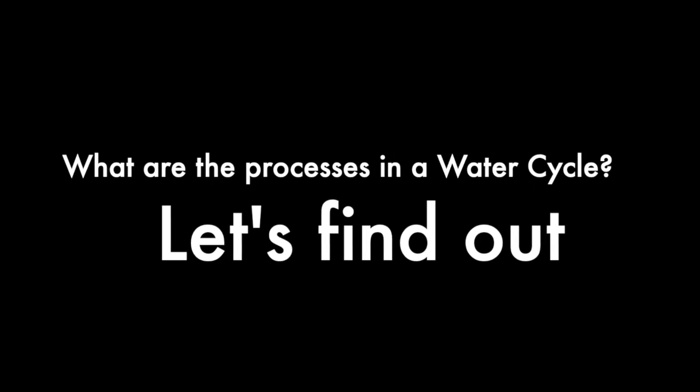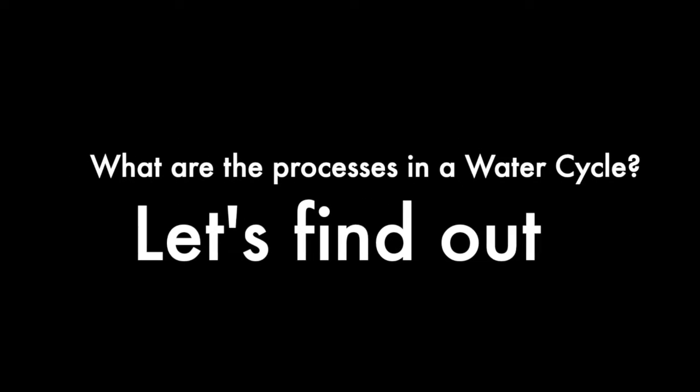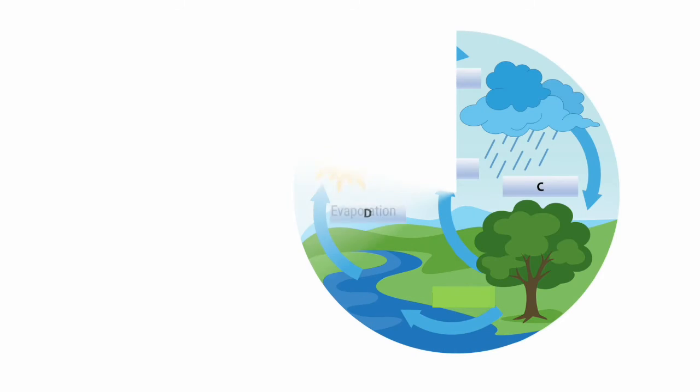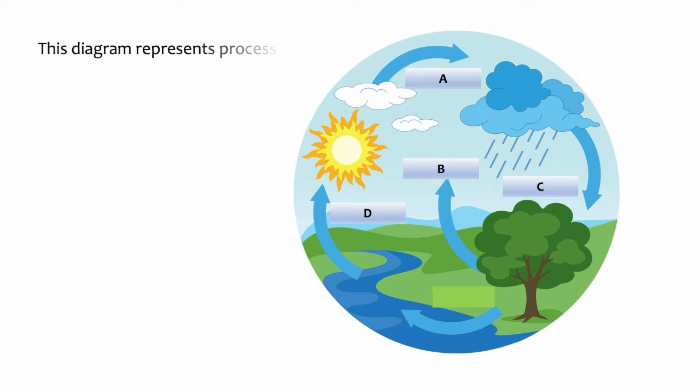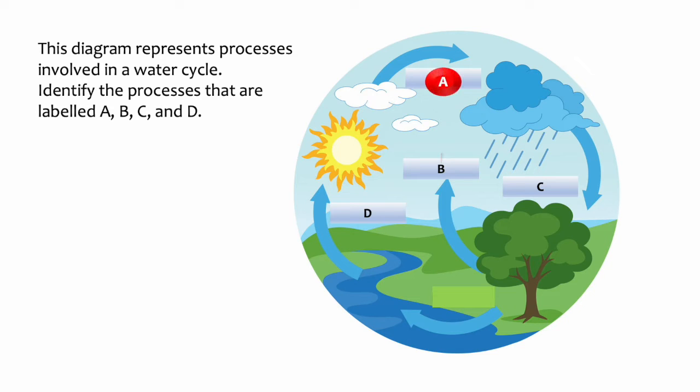What are the processes in a water cycle? Let's find out. This diagram represents processes involved in a water cycle. Identify the processes that are labeled A, B, C, and D.